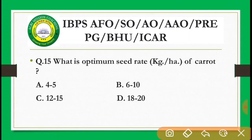Next question: What is the optimum seed rate of carrot? The correct answer is 4 to 5 kg per hectare — carrot's optimum seed rate is 4 to 5 kilograms per hectare.